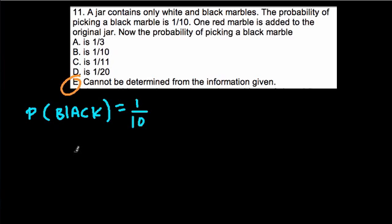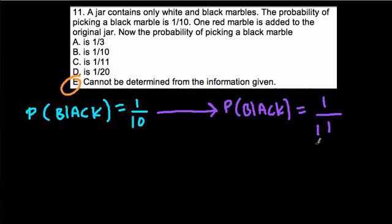At first, you might say, okay, well, if we add a red marble, or one more marble, then our probability changes, so that the probability of getting a black is then 1 eleventh, right? Because there's now 11 marbles in the jar, the amount of black marbles haven't changed. However,